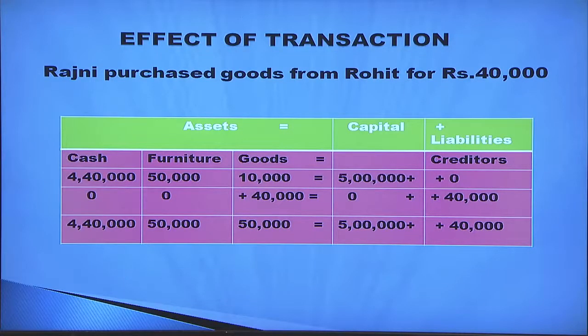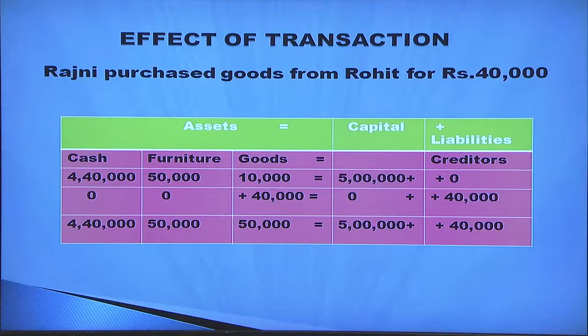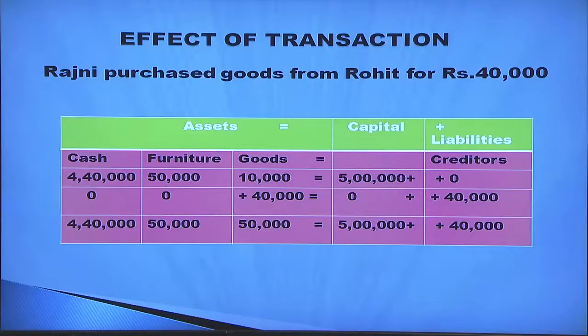Rajni purchased goods from Rohit for rupees 40,000. Goods worth 40,000 are coming inside the business. It is a credit transaction because the name of the party is given, so under liabilities we include creditors. Plus 40,000 in the goods column and plus 40,000 under the creditors column. The new accounting equation is cash four lakh 40,000 plus furniture 50,000 plus goods 50,000, totalling five lakh 40,000 on the asset side, equals capital five lakh plus creditors 40,000.